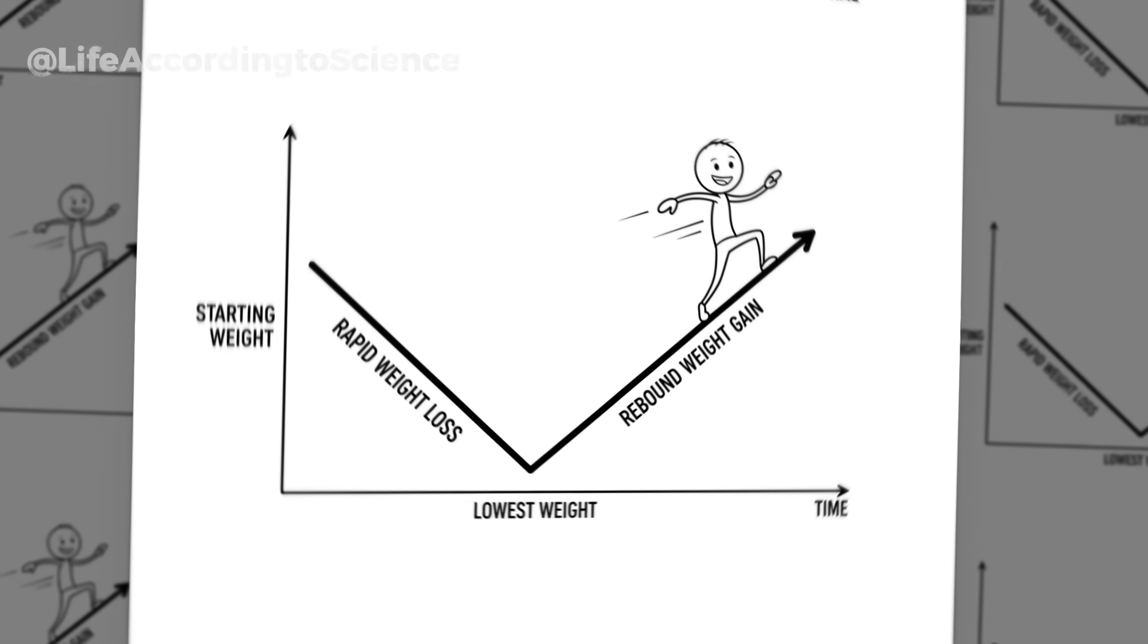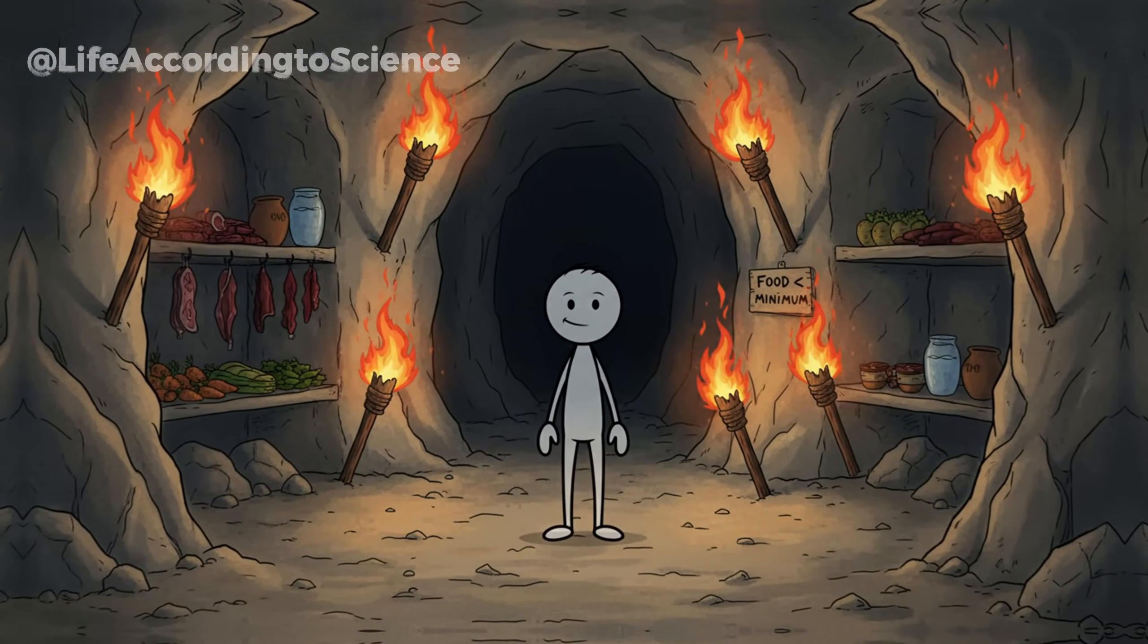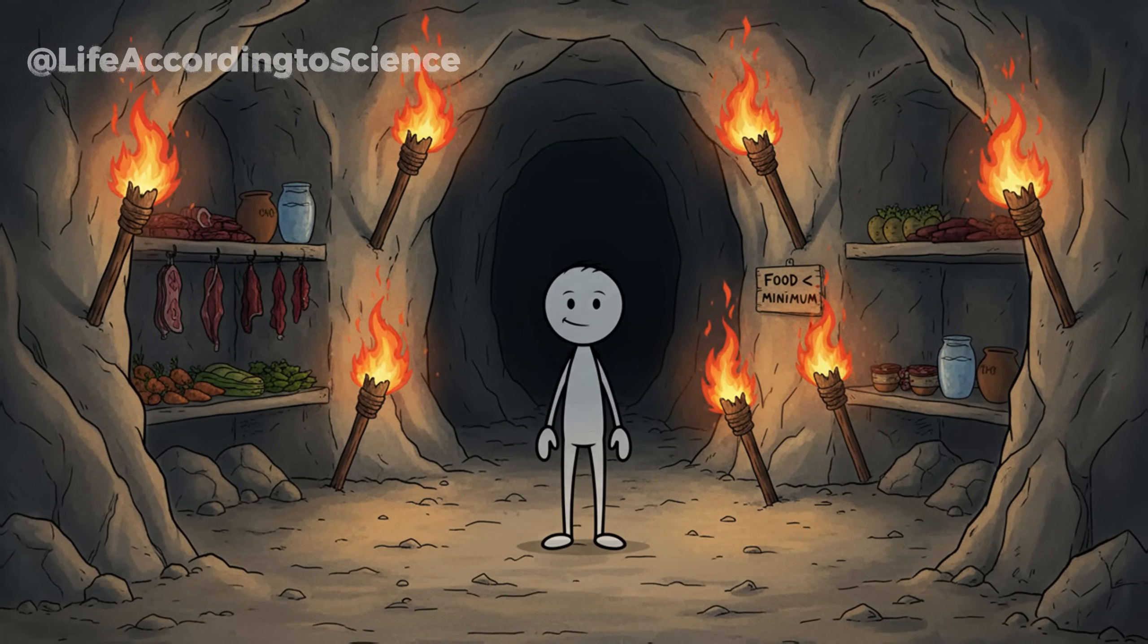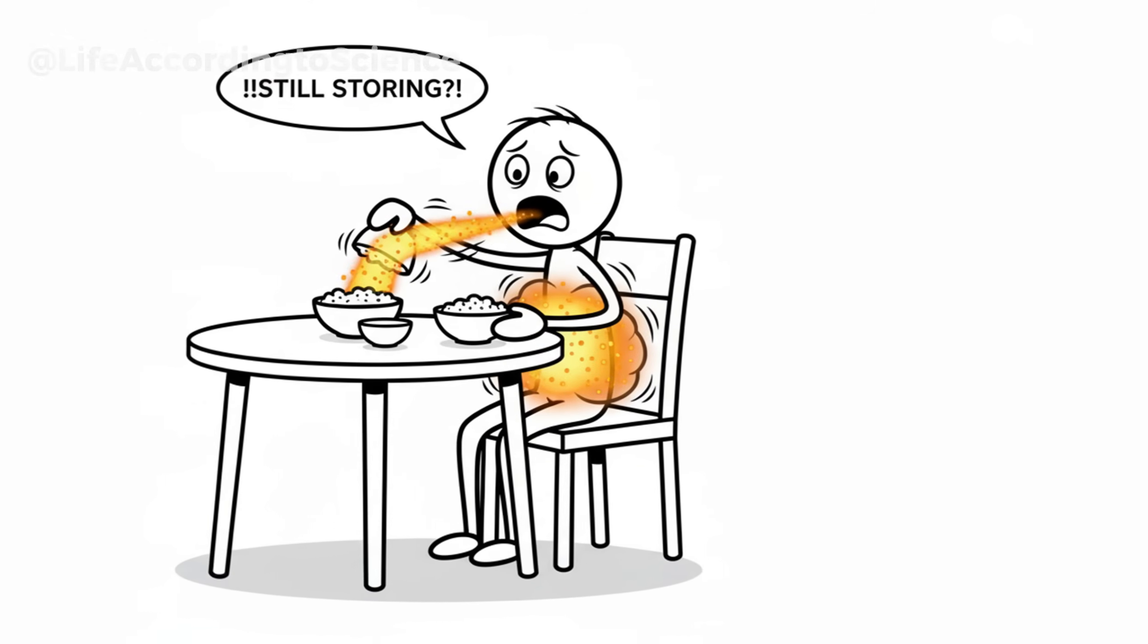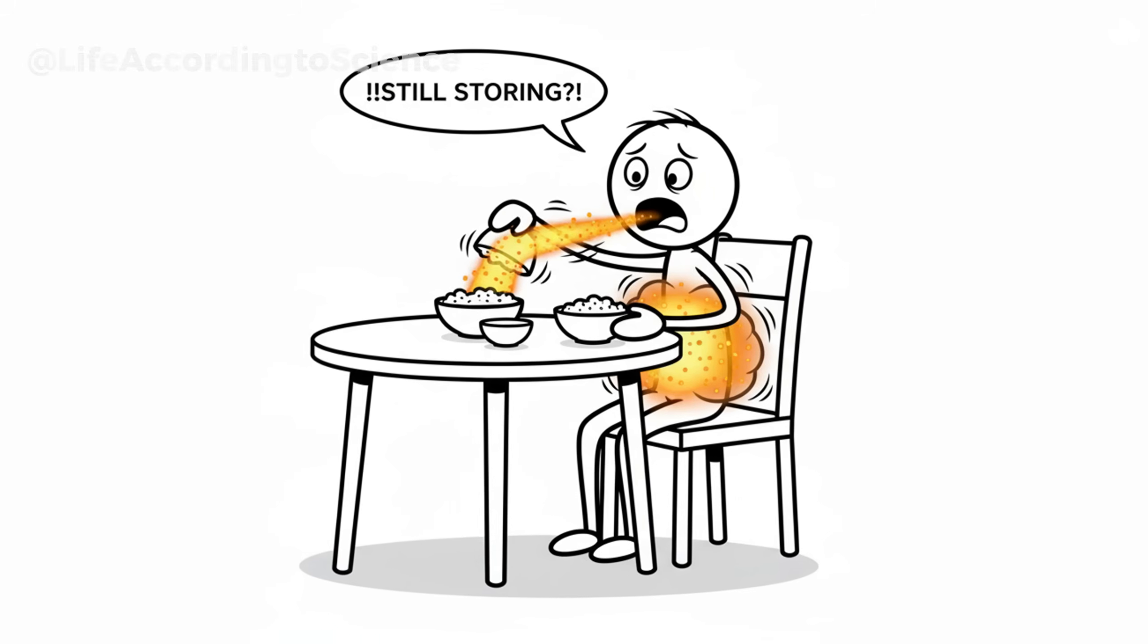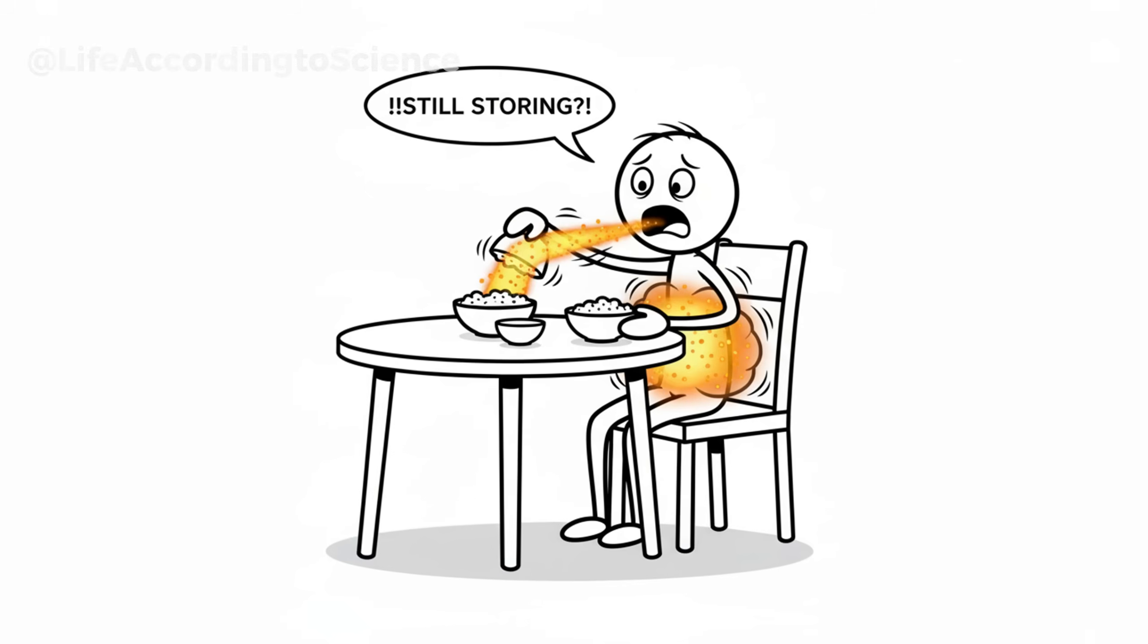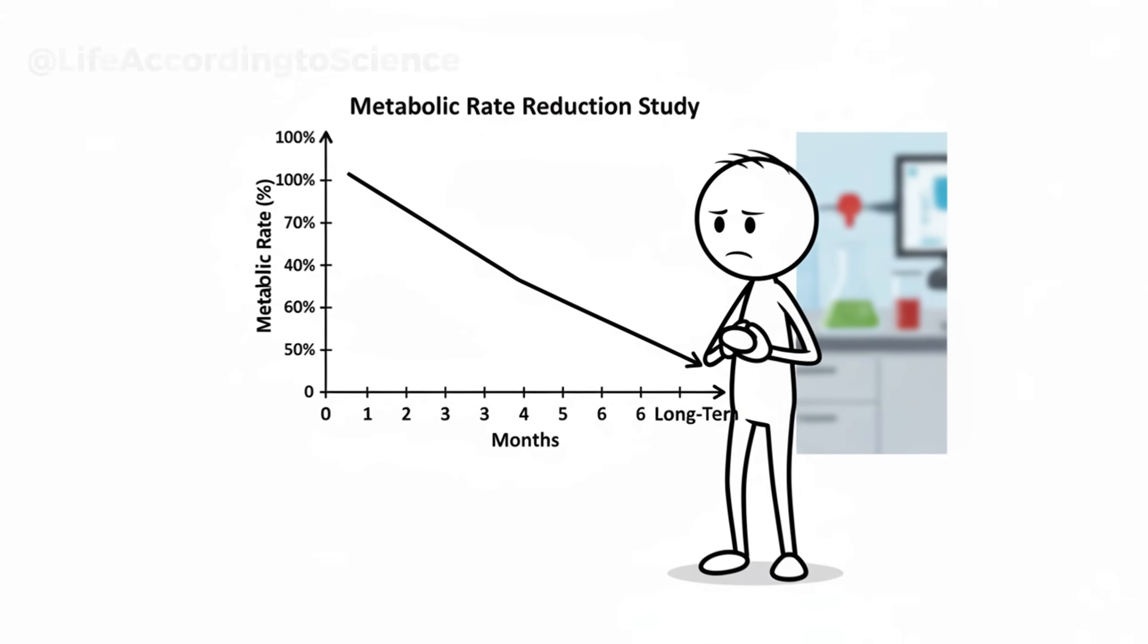Have you ever lost weight fast, only to gain it back even faster? That's not failure. That's biology. When you restrict food too severely, your body thinks you're in danger. In response, it lowers your metabolism, increases hunger hormones, and stores fat more efficiently. Once you start eating normally again, the body, still in survival mode, clings to every calorie. That's the rebound effect.